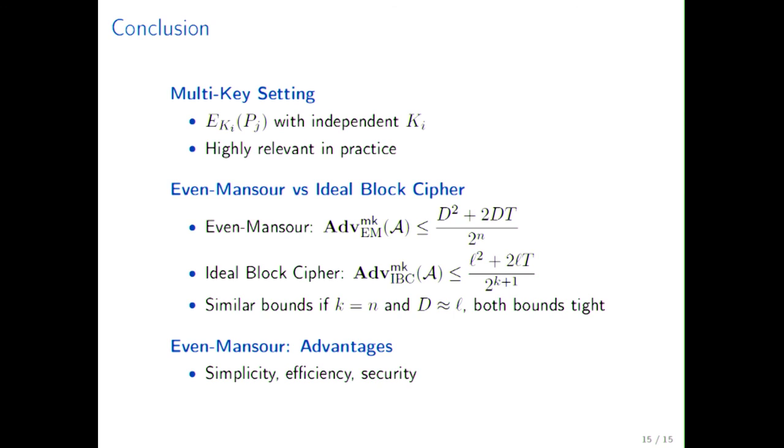So to summarize, I looked at Even-Mansour in the multi-key setting, which is encryption under multiple independent keys, which is highly relevant in practice. Bounds were given for the security, tight bounds in the case of an Even-Mansour block cipher and an ideal block cipher. And then I explained relations with practice, that Even-Mansour construction has advantages related to simplicity, efficiency and security of the implementation. This concludes my talk. I thank you very much for your attention.